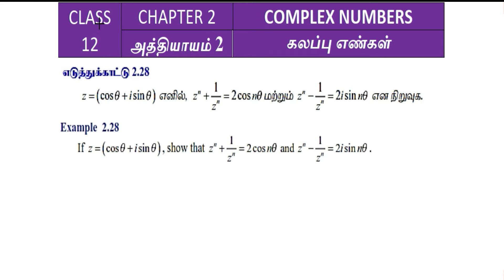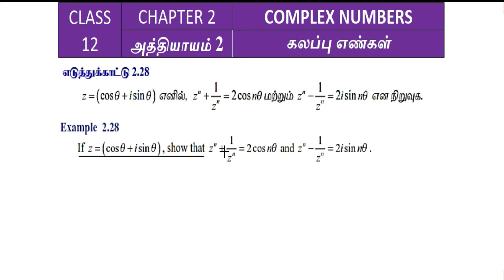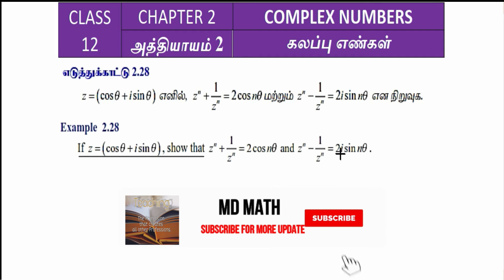As-salamu alaykum students. Class 12, chapter 2, complex numbers, example 2.28. If z equals cos θ plus i sin θ, show that z^n plus 1 divided by z^n equals 2 cos(nθ), and z^n minus 1 divided by z^n equals 2i sin(nθ).